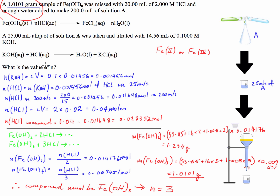This problem was a little tricky — finding the value of N meant we had to consider all the different combinations of iron hydroxide. But apart from that, it's not too difficult; we just have to work through all the steps. I hope my video helped — if it did, give it a like, subscribe to my channel, and I'll see you next time.